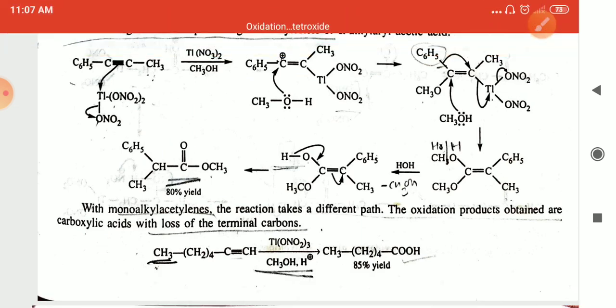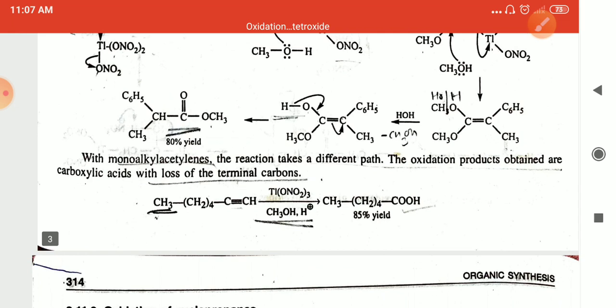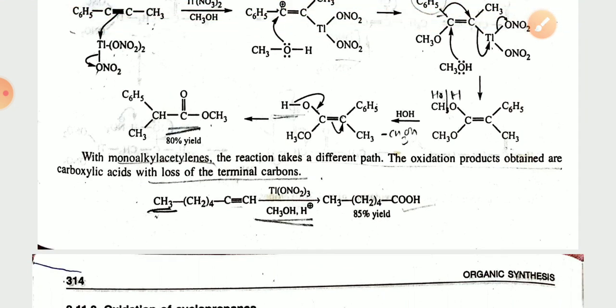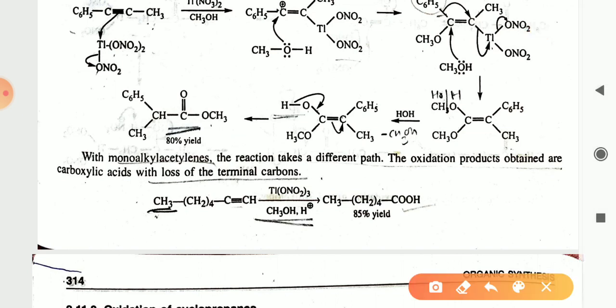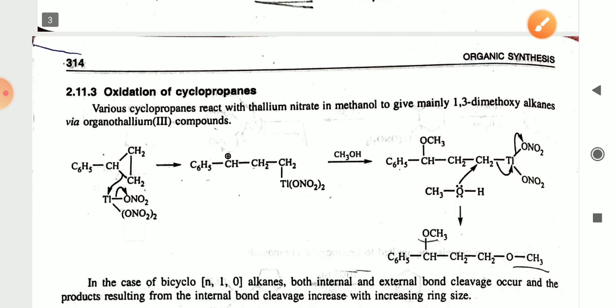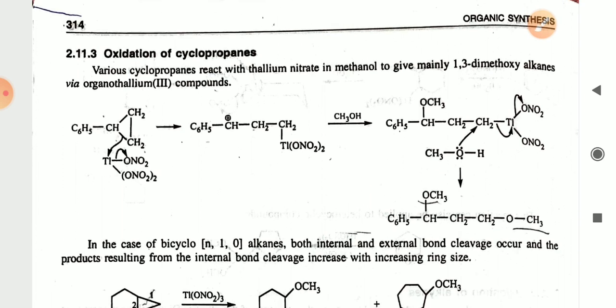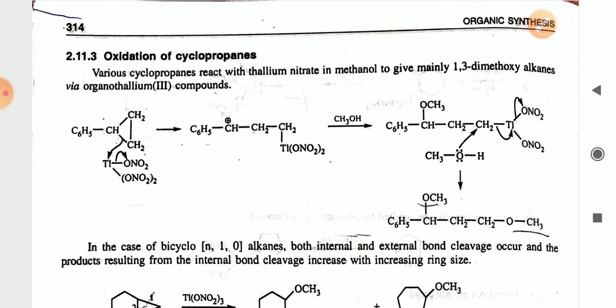For monoalkyl alkynes, the reaction takes place via a different path. The oxidation product obtained is a carboxylic acid with loss of the terminal carbon. In this reaction there is a terminal triple bond C–H, and the terminal carbon converts into the carboxylic acid in the presence of thallium nitrate.